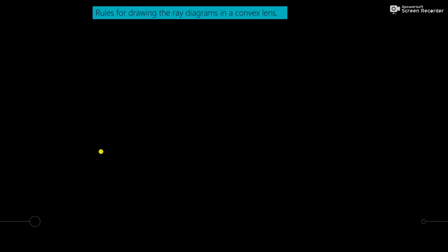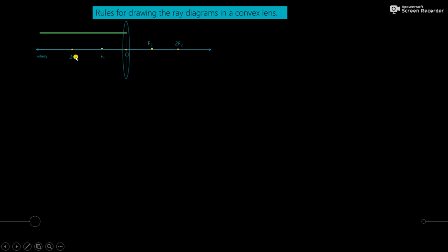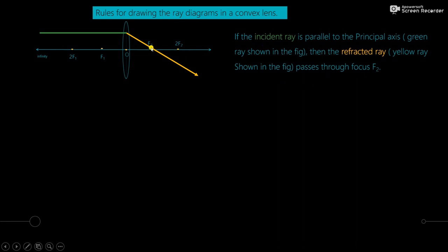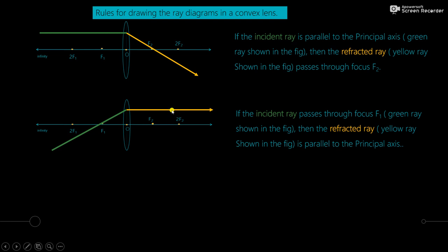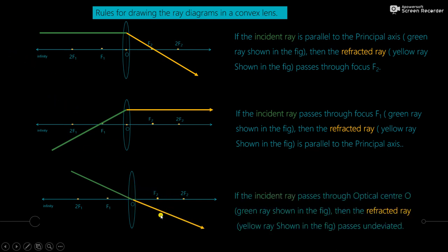Now let us look at the rules for drawing ray diagrams for a convex lens. Rule 1: a ray parallel to the principal axis, after refraction, passes through focus f2 on the other side. Rule 2: if the incident ray passes through focus f1, then the refracted ray is parallel to the principal axis. Rule 3: if the incident ray passes through the optical center, then the refracted ray passes undeviated — it travels straight without changing direction.